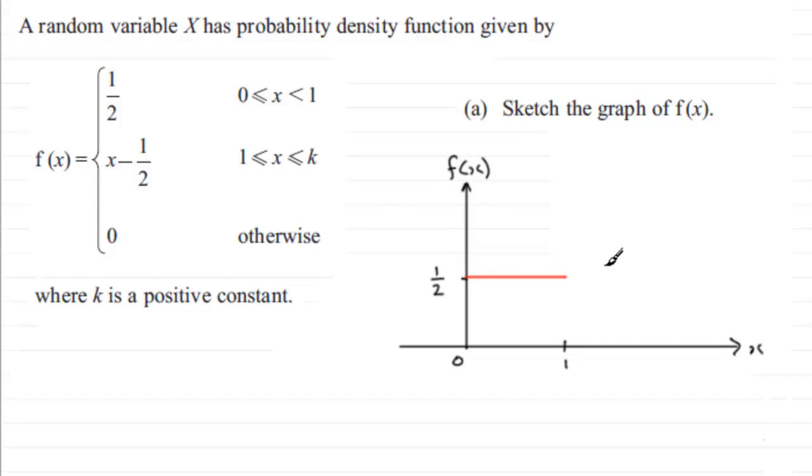Now for the next section, f(x) equals x minus 1/2. This is a linear function, so I can expect a straight line graph. Its gradient is 1 because we've got 1x here, and it would intercept the y-axis, well in this case the f(x) axis, at minus 1/2. So I can expect a line looking something like this.